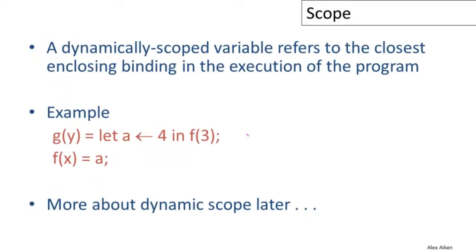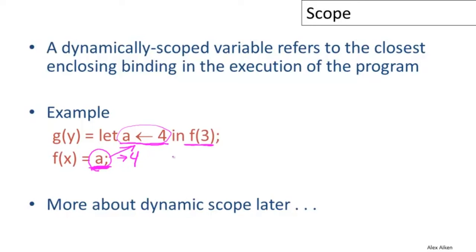In a dynamically scoped language, a variable refers to the closest binding in the execution of the program — the most recent binding. For example, if function G defines variable A initialized to four and calls function F which refers to A, then under dynamic scoping F will return four because it refers to G's binding of A. We'll discuss dynamic scope further when we talk about language implementation.